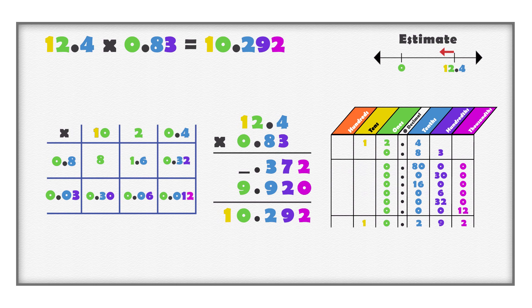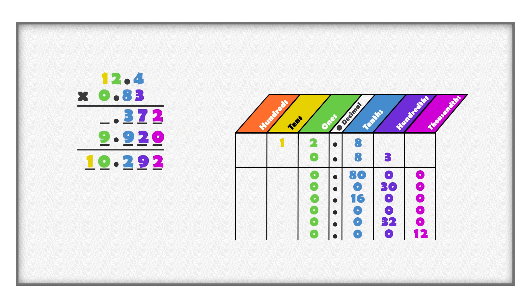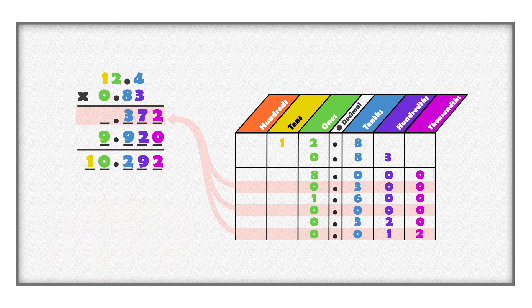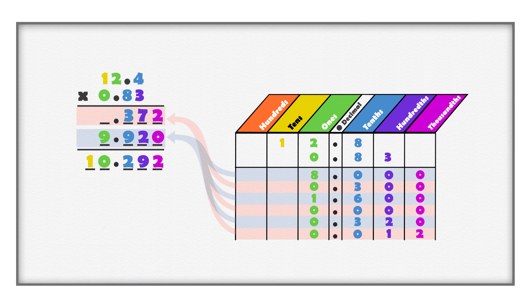Notice that we get the same answer using each model; we can be confident about our work and the answer. Compare the place value chart model and the algorithm. Remember, 80 tenths is 8, and 16 tenths is 1 and 6 tenths. 30 hundredths is 3 tenths, and 32 hundredths is 3 tenths and 2 hundredths. 12 thousandths is 1 hundredth and 2 thousandths. Notice the partial products in the algorithm. The same partial products are used in the algorithm and the place value chart.